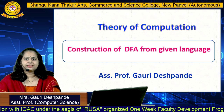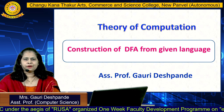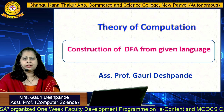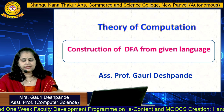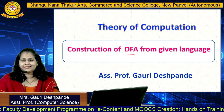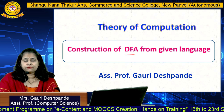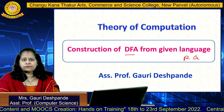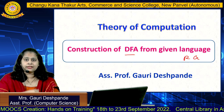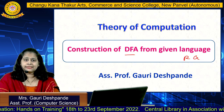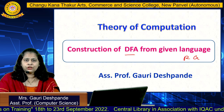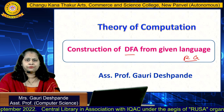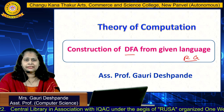Hello friends, today I am going to discuss a very important topic of Theory of Computation — that is, construction of DFA from a given language. DFA is nothing but a Discrete Finite Automata. The use of finite automata is to draw the regular grammar. There are four types of grammar: regular grammar, context-free grammar, context-sensitive grammar, and recursive enumerable grammar. To identify regular grammar, we use DFA.